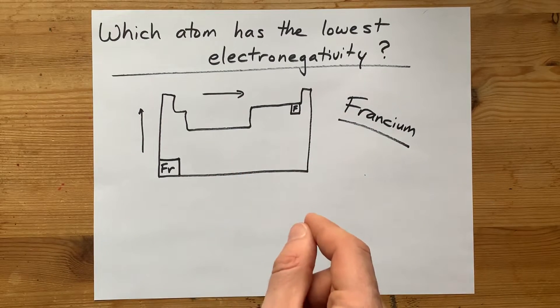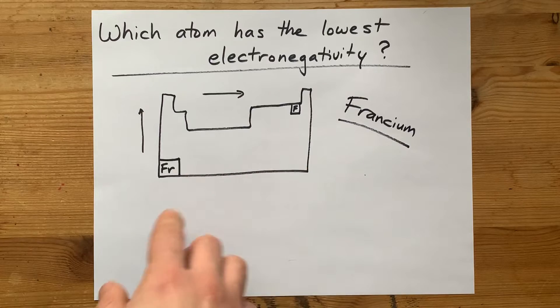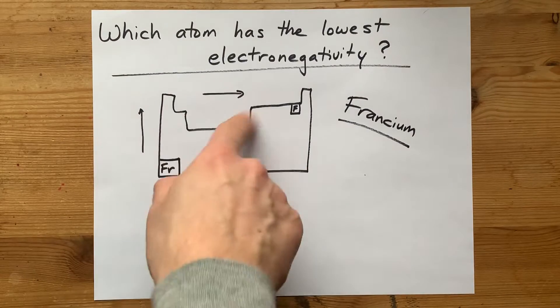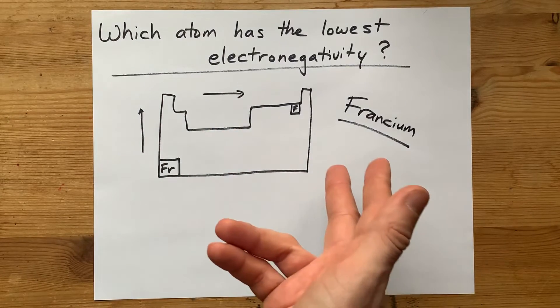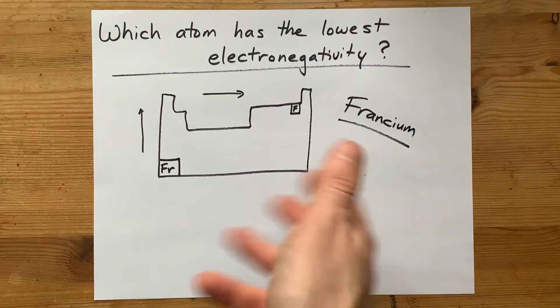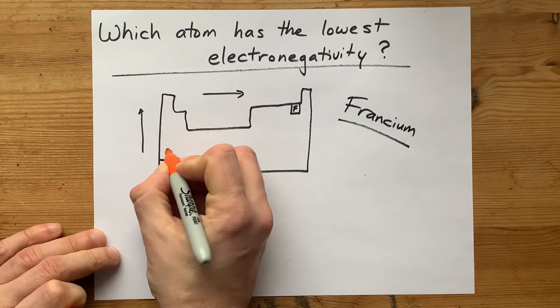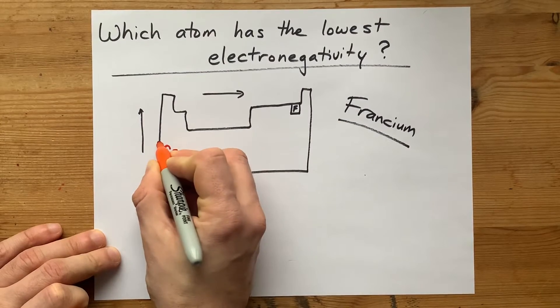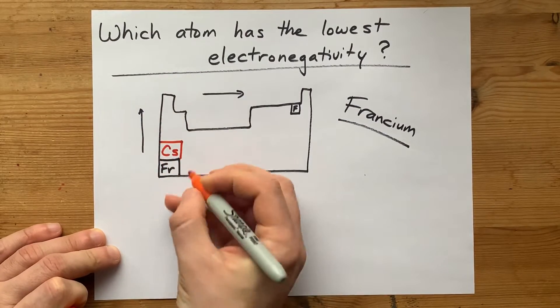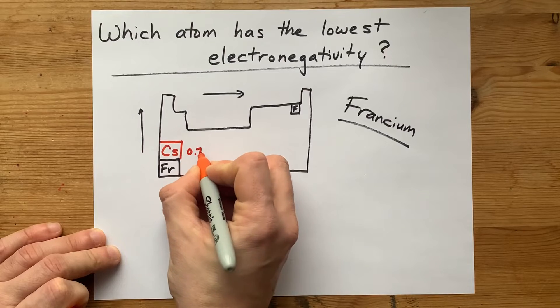And we've gotten just enough of it to figure out that it actually bucks the trend for ionization energy. And according to Wikipedia and a few other papers that I looked at, the actual answer to this question is that cesium has the lowest electronegativity. It's 0.79.